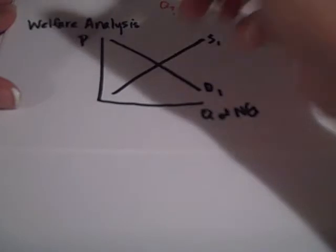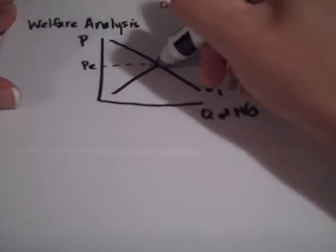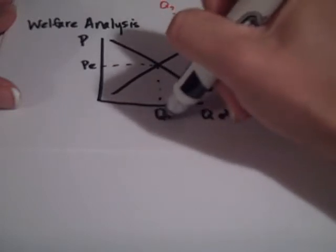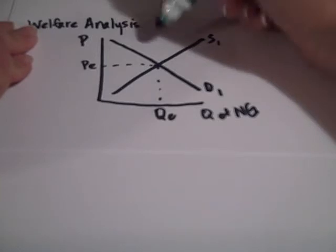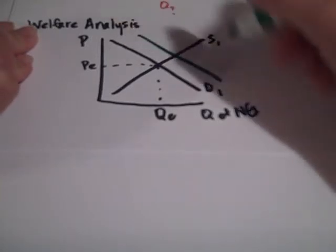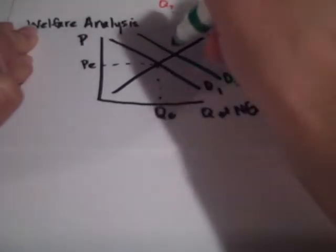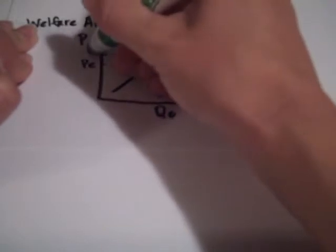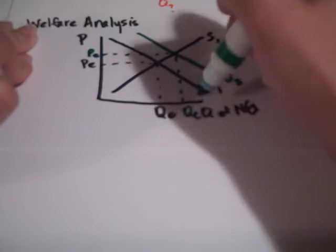We have our original price equilibrium and quantity equilibrium. Now, as we said before, we'll just stick with our demand example, that it's an extremely cold winter, so our demand shifted to the right. We are demanding more. Our taste and preferences have increased, so we have a new price equilibrium and a new quantity equilibrium.